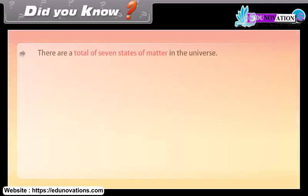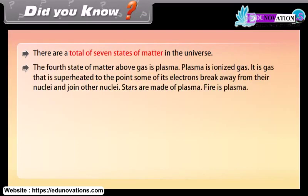Did you know? There are a total of seven states of matter in the universe. The fourth state of matter above gas is plasma. Plasma is ionized gas. It is gas that is superheated to the point some of its electrons break away from their nuclei and join other nuclei. Stars are made of plasma. Fire is plasma.